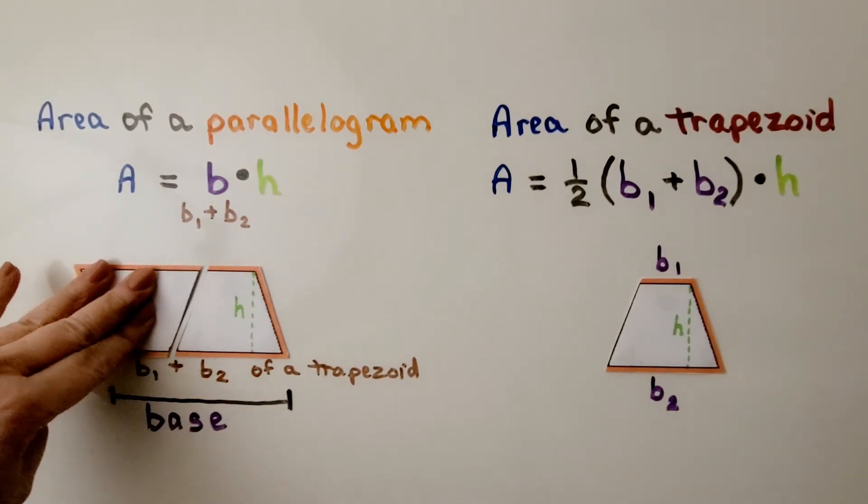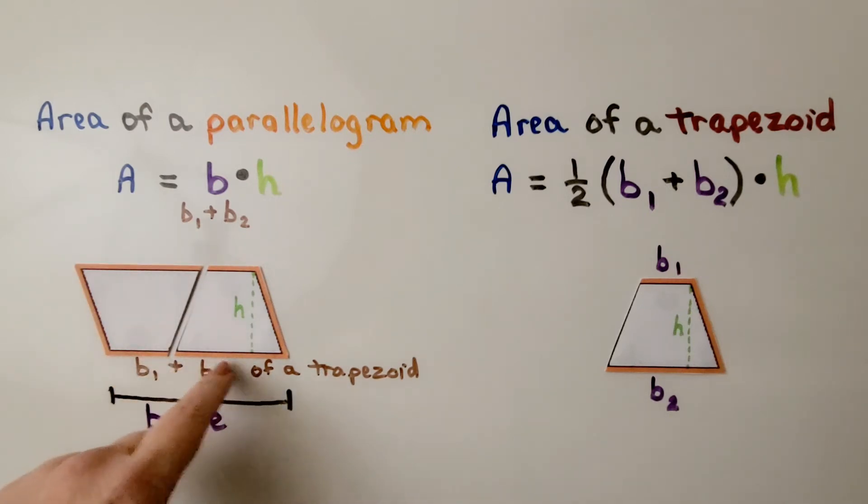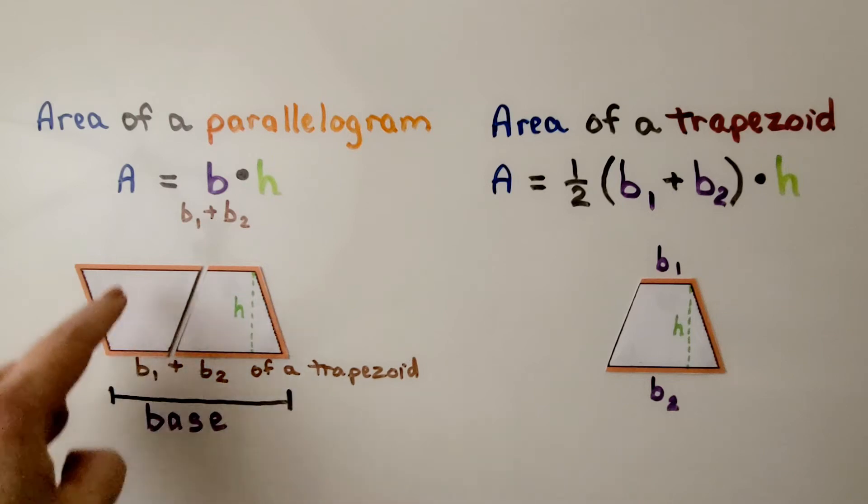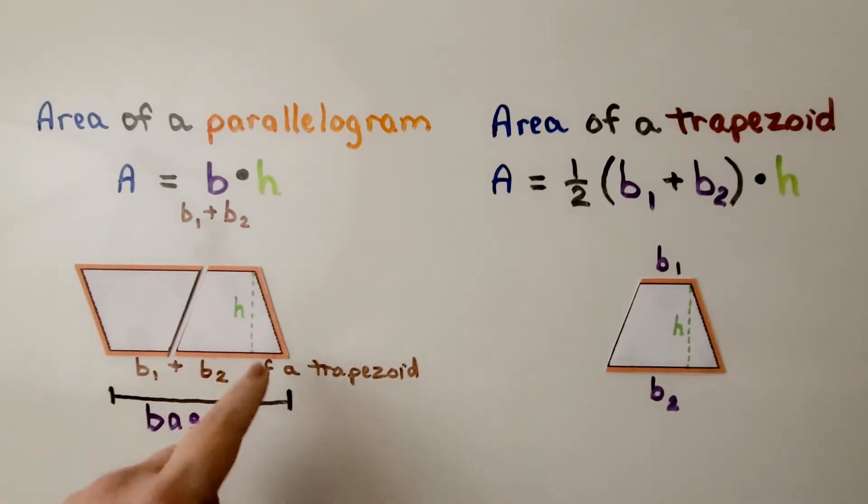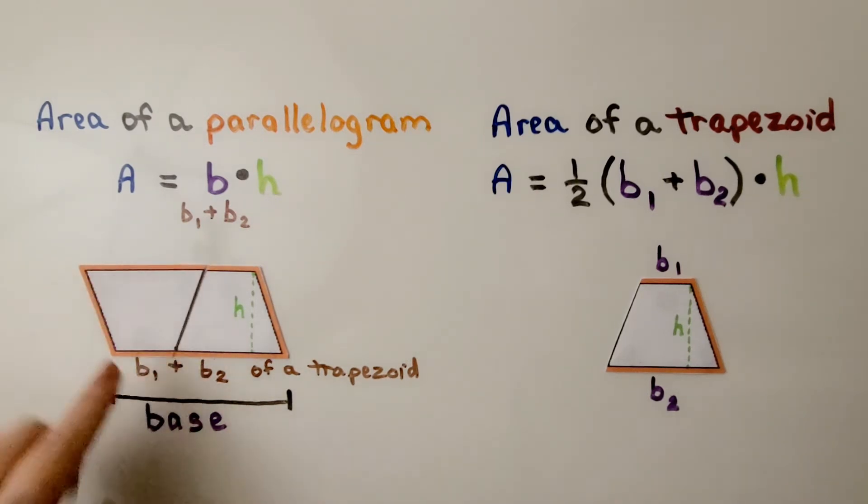So that's the base sub 1 and that's down here, the base sub 2. We have our base sub 1, our base sub 2. We have a base sub 1 up here and a base sub 2 up here for the trapezoid. But for the parallelogram, the base is both of these together. This is the entire base for the parallelogram.